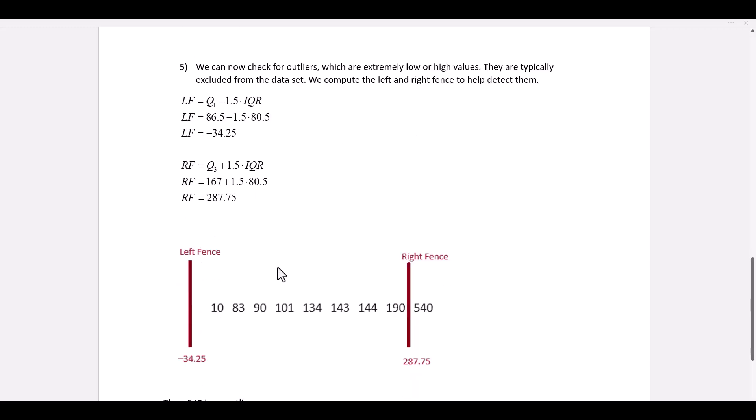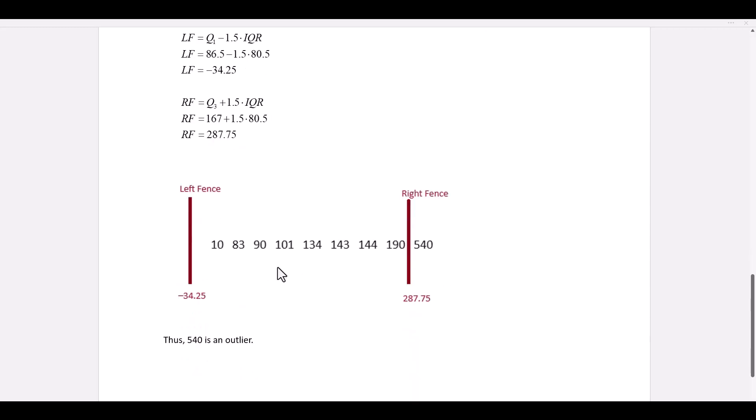Now we can look at the original data set and determine if there are any outliers. So the left fence is negative 34.25. That's to the left of our lowest value. So there's no outliers on the left side. The right fence is 287.75. That's between 190 and 540.